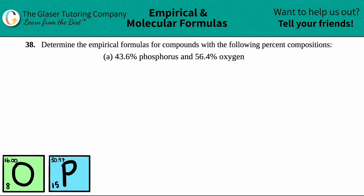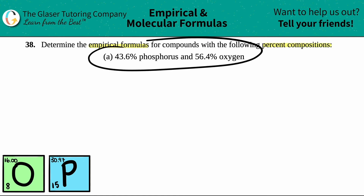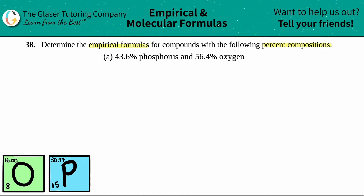Number 38: determine the empirical formulas for compounds with the following percent compositions. In this case, we have to find an empirical formula of a compound that is 43.6% phosphorus and 56.4% oxygen.